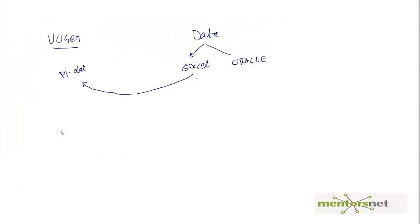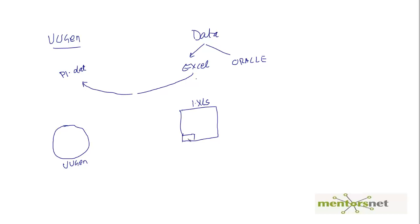Let me explain the concept. This is our Virtual User Generator — VUGen — and somewhere we have an Excel file, say 'one.xls', with multiple sheets. In sheet number one we have the data we need. To connect VUGen to the Excel file, we need to create a Data Source Name, or DSN. The DSN is essentially a connection between VUGen and the Excel file — that is the first thing we need to do.